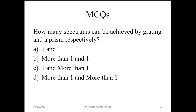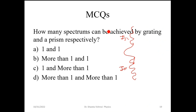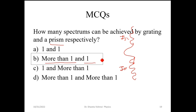How many spectra can be achieved by grating and prism respectively? The options are: one and one, more than one and one, one and more than one, or more than one and more than one. A grating produces more than one spectrum (first order on both left and right sides), while a prism shows only one order. So the correct answer is more than one and one.